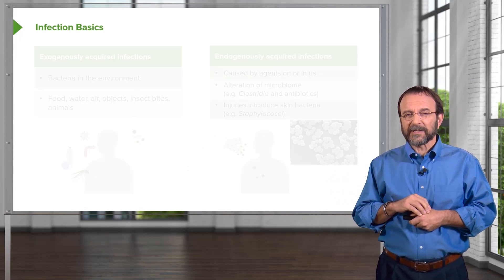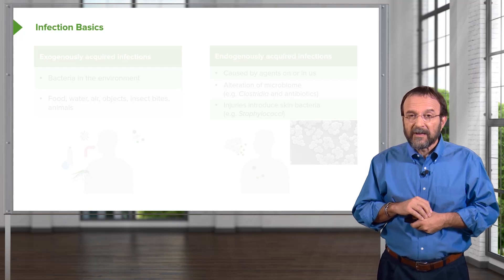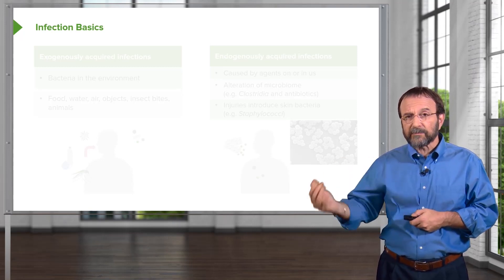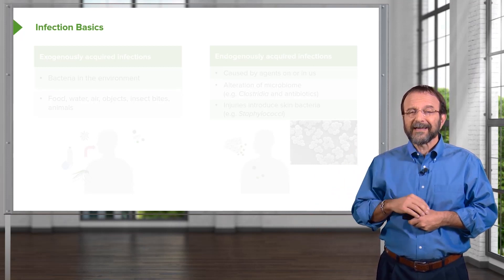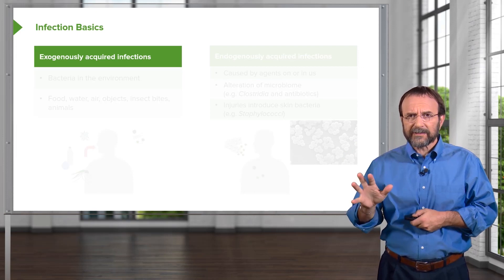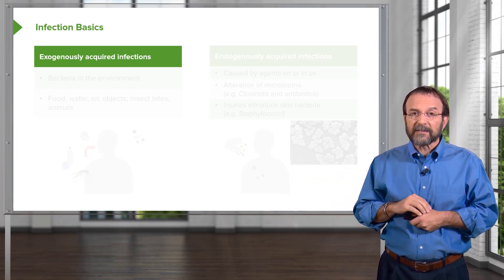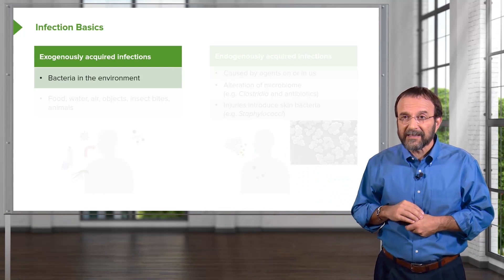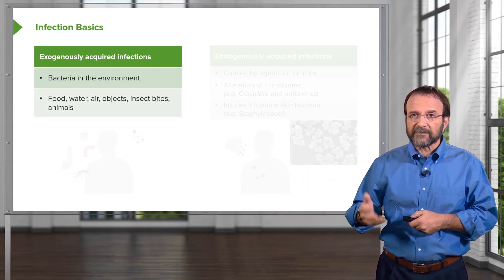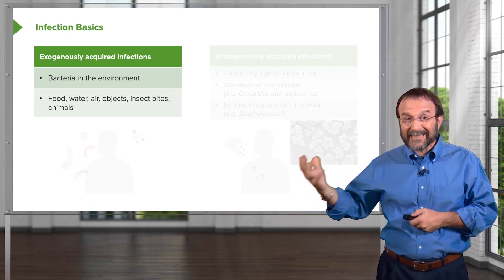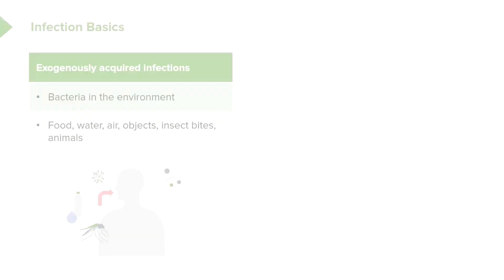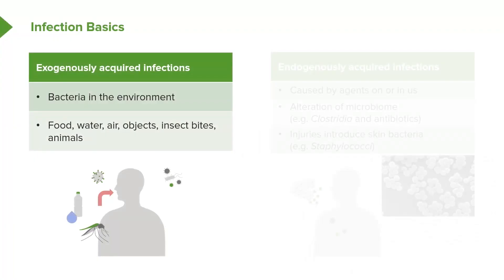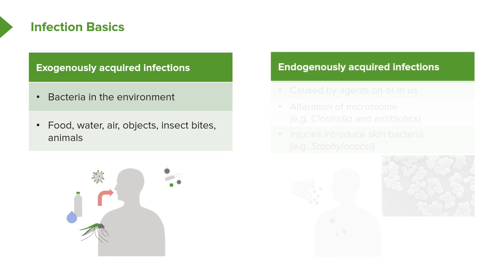The consequences of the microbiome for human health are going to be learned in the next 10 years. Now, on to infection basics. Let's talk about some principles by which bacteria can enter the host. We can divide bacterial infections into two broad groups depending on how they're acquired. Some are acquired exogenously from an external source — bacteria in the environment, food, water, air, objects we touch, insect bites, or animal bites. That contrasts with endogenously acquired infections, where our own microbiome suddenly turns on us.